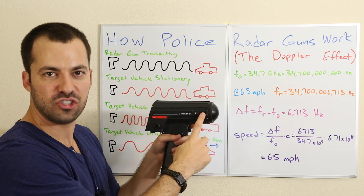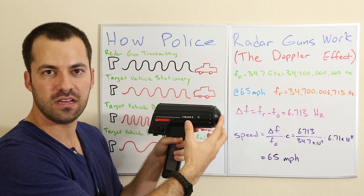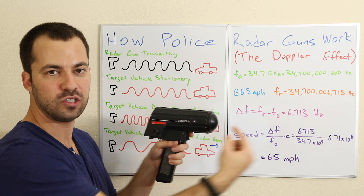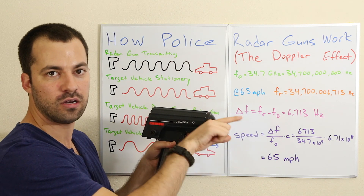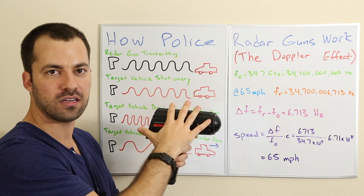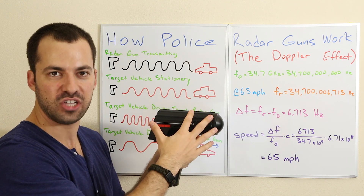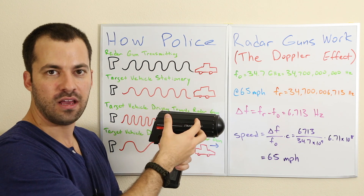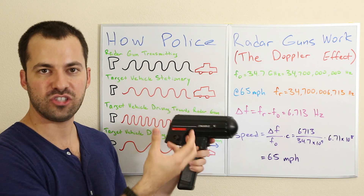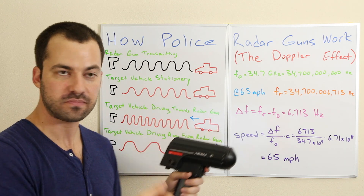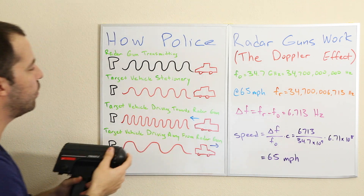The frequency is going to change depending on how fast that car is moving towards the radar gun or away. The radar gun is then going to measure that change in frequency, do a little bit of math, and then convert that change of frequency into a speed. Let's take a look at how it works.